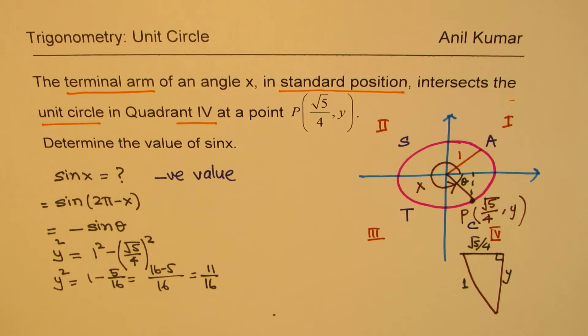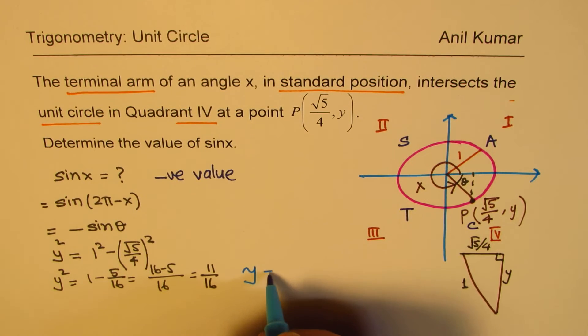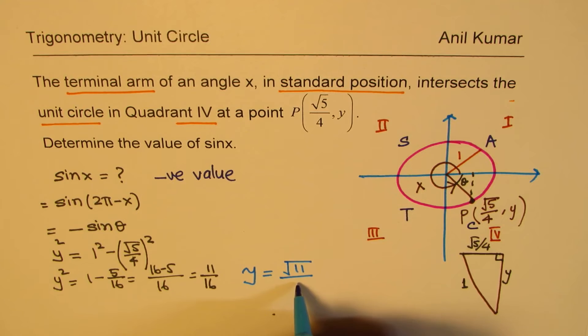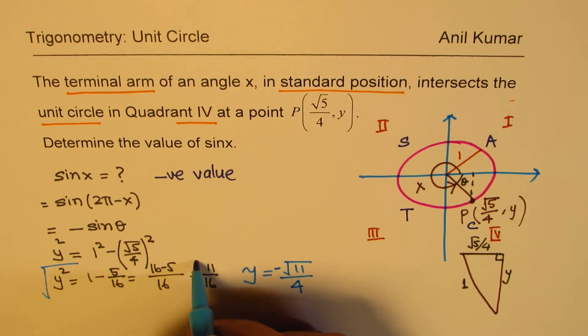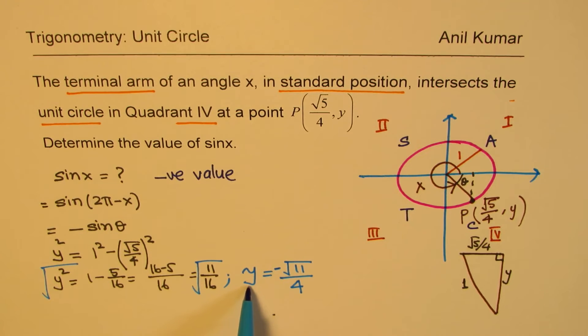So from here, what is the value of Y? Y is equal to square root of 11 over square root of 16, which is 4. Since you are in quadrant 4, it is a negative value. So what we did here was that we did square root on both the sides. So that gave us Y equals minus square root 11 over 4.